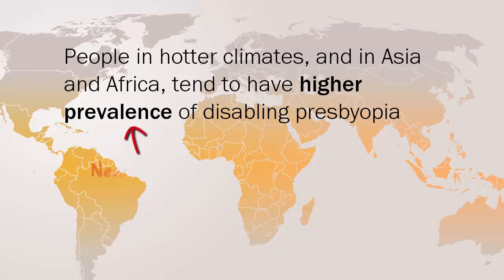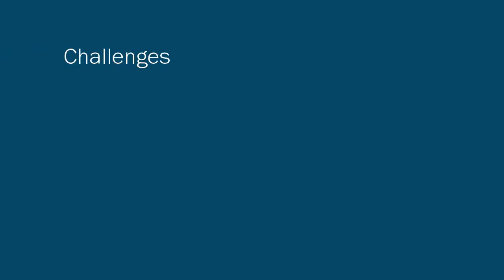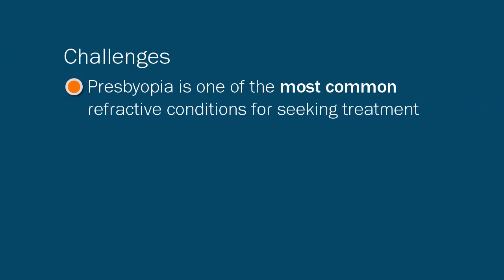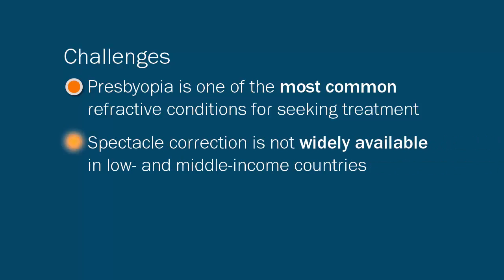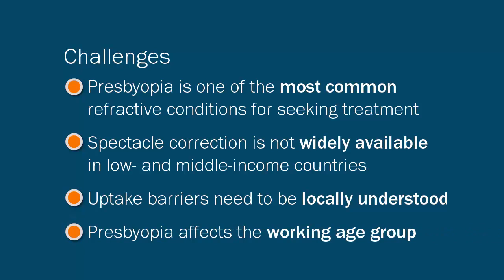Nearly half of Asian and African people aged over 30 experience disabling presbyopia, compared to Caucasian people who begin to experience difficulties by the age of 45. Challenges: Presbyopia remains one of the most common refractive conditions for seeking treatment. Spectacle correction is not widely available in low- and middle-income countries. Barriers to uptake of services need to be locally understood. Presbyopia affects the working age group and their quality of life, and this can have an economic impact.